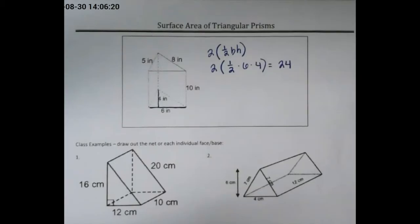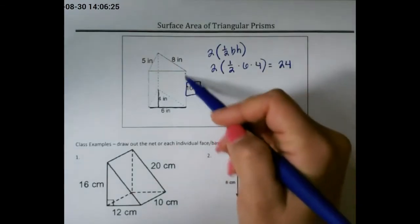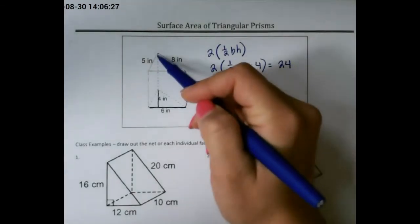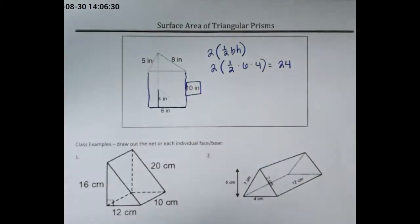Now we need to find the rectangles. The length of all three of my rectangles is going to be 10, because this line is 10, which means this dotted line in the back is 10, and that is also 10.